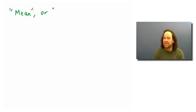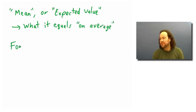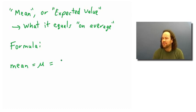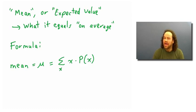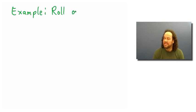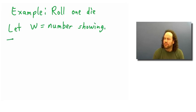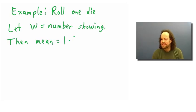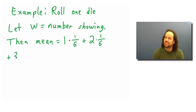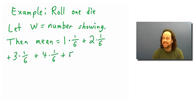Once we're talking about random variables, we can talk about quantities related to them — for example, their mean or expected value, which is what number they equal on average. There's a simple formula: you add up all the possible values multiplied by their probabilities. For rolling a die, the mean equals 1×(1/6) + 2×(1/6) + 3×(1/6) and so on up to 6×(1/6), which works out to 3.5, not 3 as some people might think.